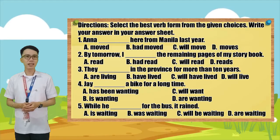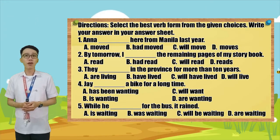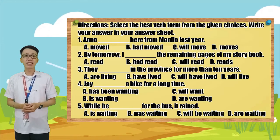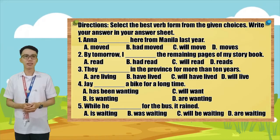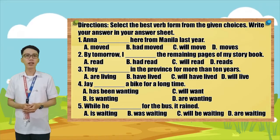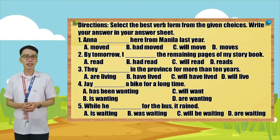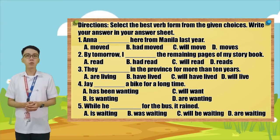Number three: They _____ in the province for more than 10 years. A. Are leaving. B. Have lived. C. Will have lived. D. Will leave. Number four: Jade _____ a bike for a long time. A. Has been wanting. B. Is wanting. C. Will want. D. Are wanting.